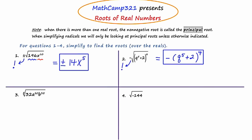Let's move to number three, which says the fifth root of 32, a to the twentieth, b to the thirty-fifth. Let's start by focusing on the numerical expression under the radical, which is 32. What number times itself five times is going to give us 32? If you guessed two, you're correct, because two times two times two times two times two is 32. So the fifth root of 32 is two. In this one, we don't need a plus or minus in front. Now let's move to the first monomial, which is a to the twentieth.